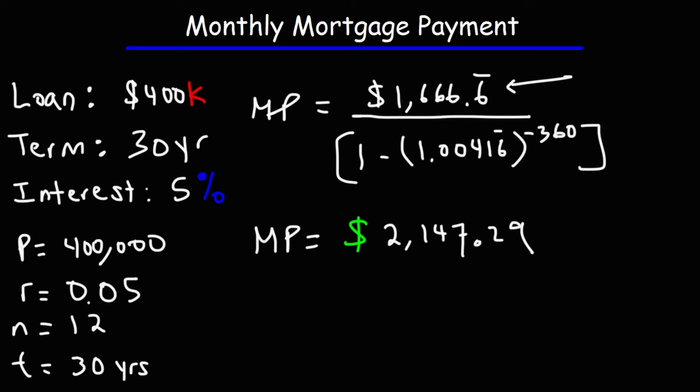It's $2,147.2865, but I round it to the nearest cent. So, that is the monthly payment that you need to pay back for this loan, given this information that we have here.